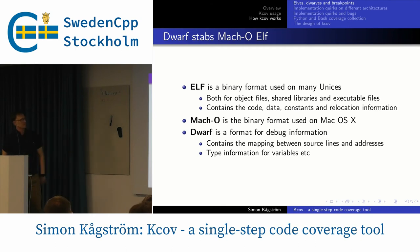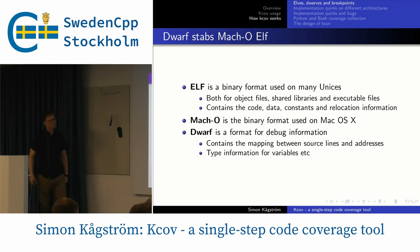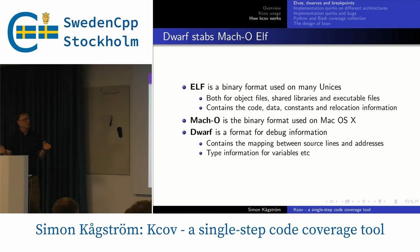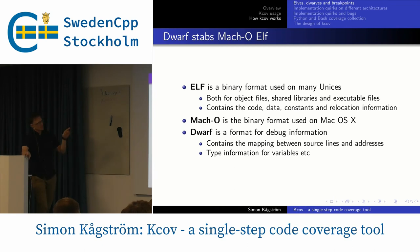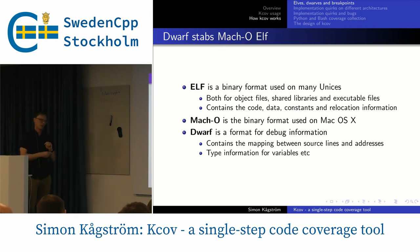Binaries in Linux and many other Unix systems are stored in the ELF binary format. This goes for both binaries, shared libraries, and object files. ELF basically contains code, data, constants, relocation information, and debug information. On OS X, the binary format used is Mach-O — I'd see it as macho — which performs basically the same things as ELF does. And then there is DWARF, which is a format for debug information. For KCov, the most important thing in DWARF is that it contains the mapping between source lines and addresses.